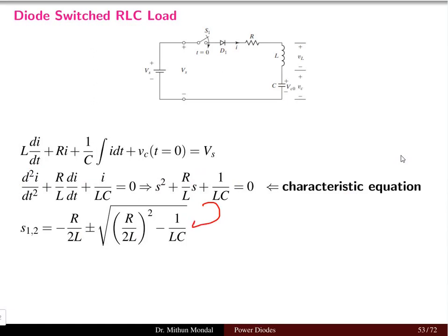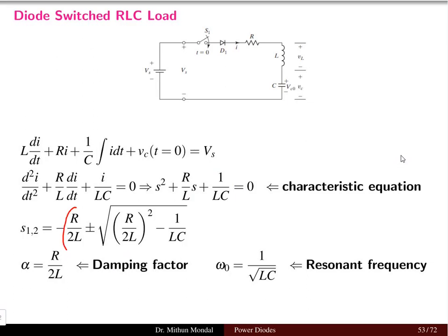The roots of this characteristic equation are given by: minus R/2L ± √[(R/2L)² − 1/LC]. This comes from the quadratic formula since it is a second order equation. The factor R/2L is called alpha, known as the damping factor, and the term 1/√(LC) is omega_0, which is the resonant frequency of the system.